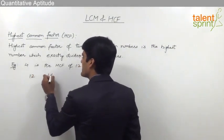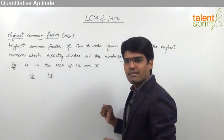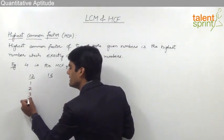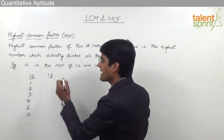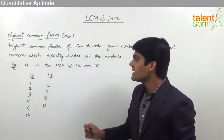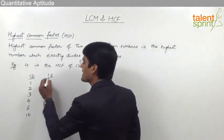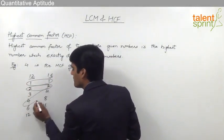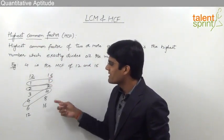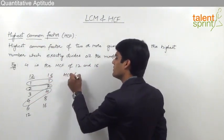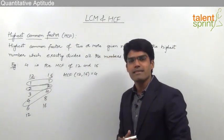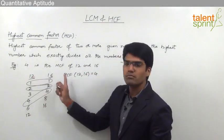Let us understand this in an illustrative manner. The given numbers are 12 and 16, so let us find out the factors of these two numbers. The factors of 12 are 1, 2, 3, 4, 6, and 12, whereas the factors of 16 are 1, 2, 4, 8, and 16. The common factors are 1, 2, and 4. The highest common factor out of these is 4, so the HCF of 12 and 16 is 4 — the largest number that can divide both.